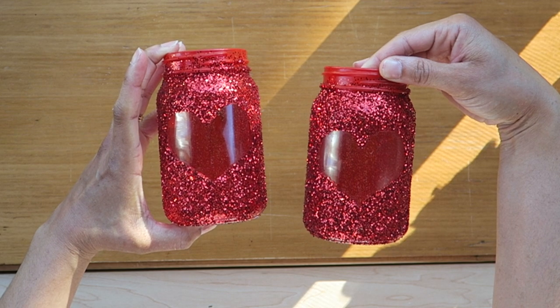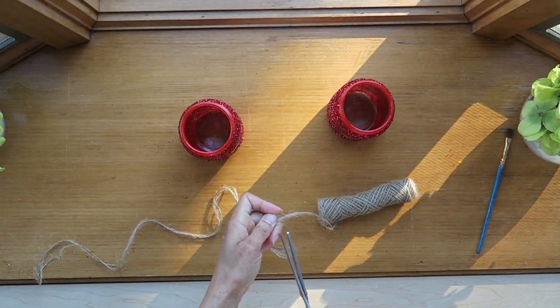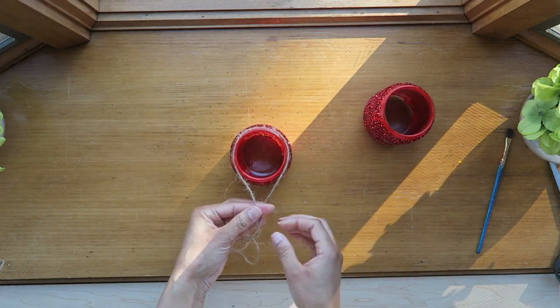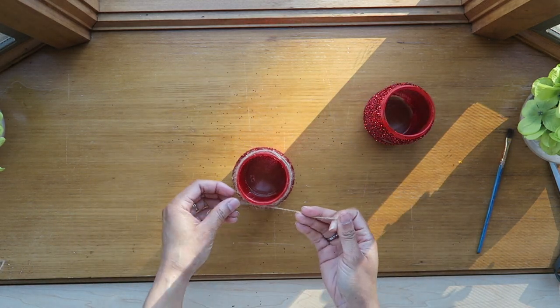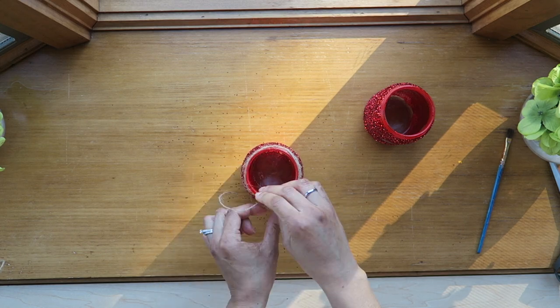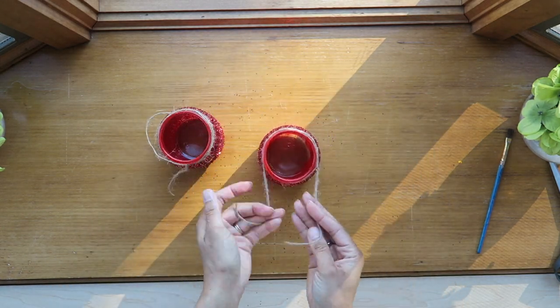For the final touch of the jar, I got this twine that I purchased at the Dollar Tree and wrapped it around three times around the jar, then tied a knot leaving a bit of excess twine at the ends there.